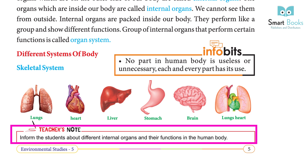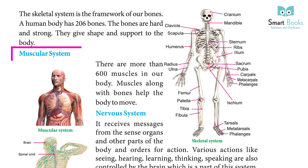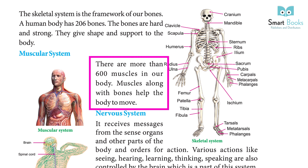The skeletal system is the framework of our bones. A human body has 206 bones. The bones are hard and strong — they give shape and support to the body. The muscular system has more than 600 muscles in our body.